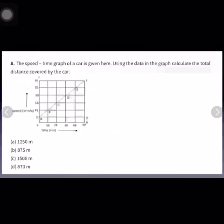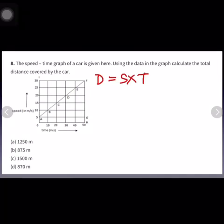Question number eight: the speed-time graph of a car is given. Using the data in the graph, calculate the total distance covered by the car. We know that distance equals speed multiplied by time. Both speed and time are given in the graph, so we calculate distance using the area under the graph.